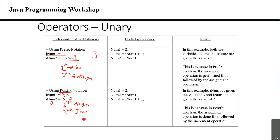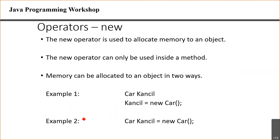We also have the new operator in Java, which is used to allocate memory to an object. You can create an object of your class and then allocate memory separately, or you can do it all in one line — both are acceptable.